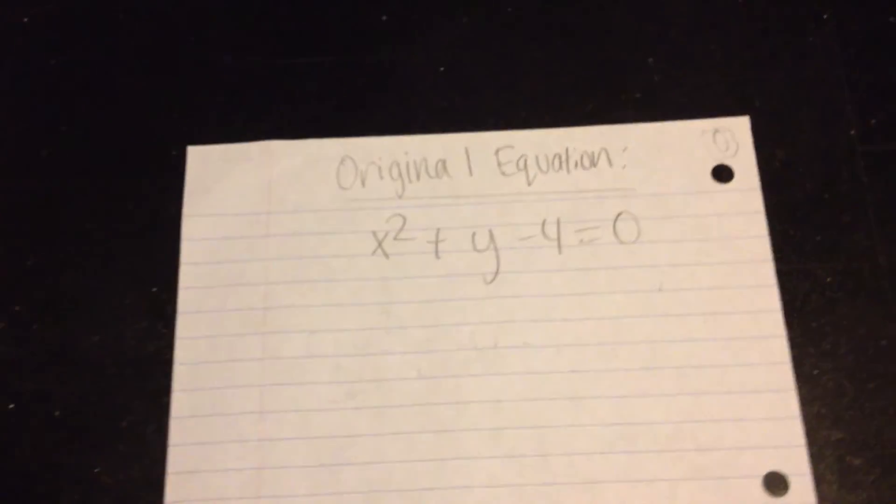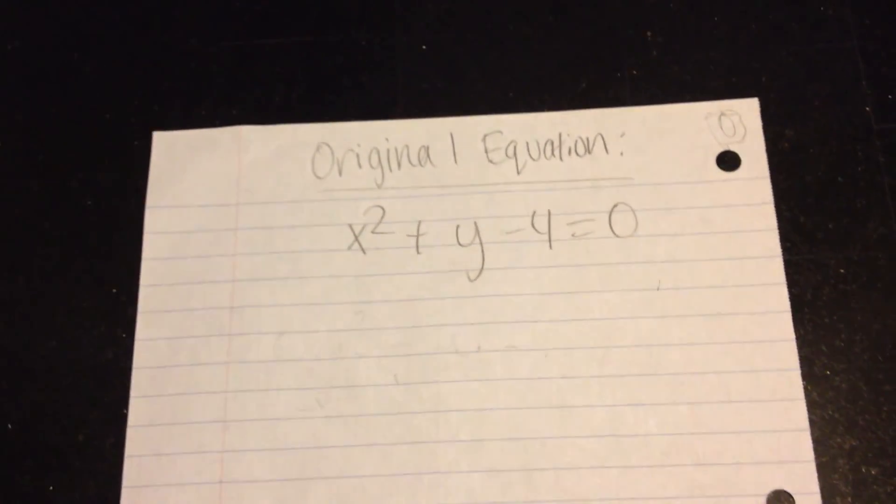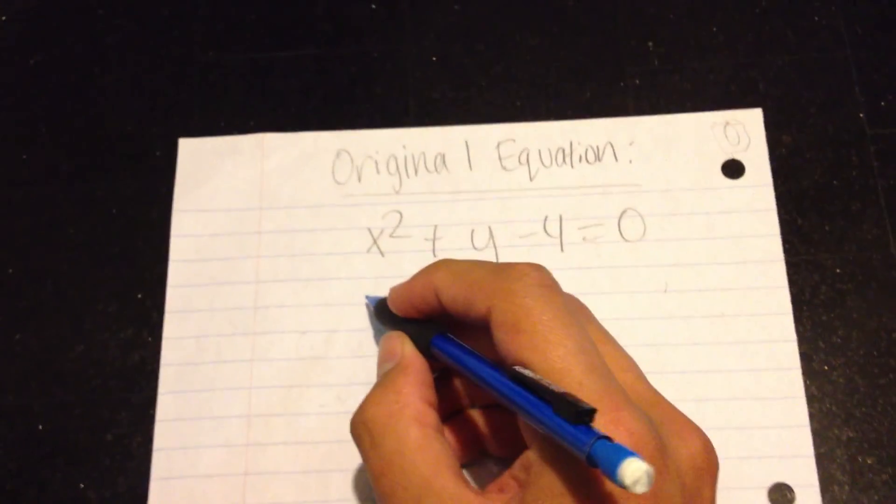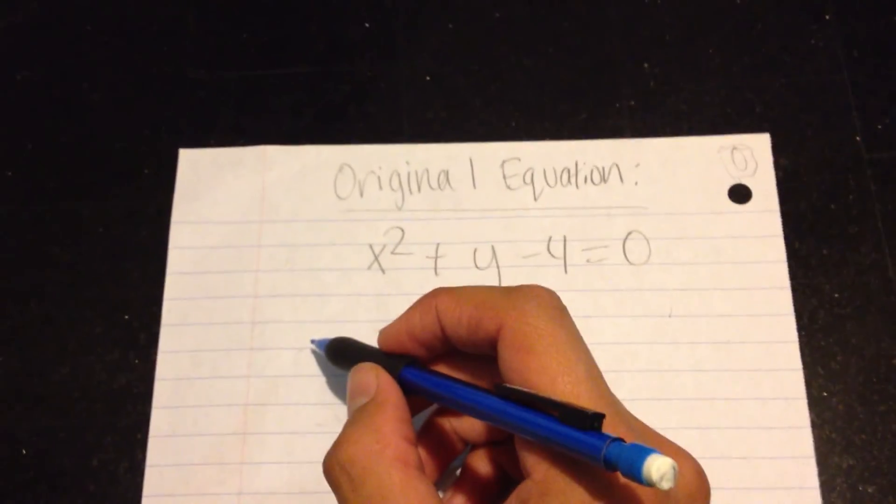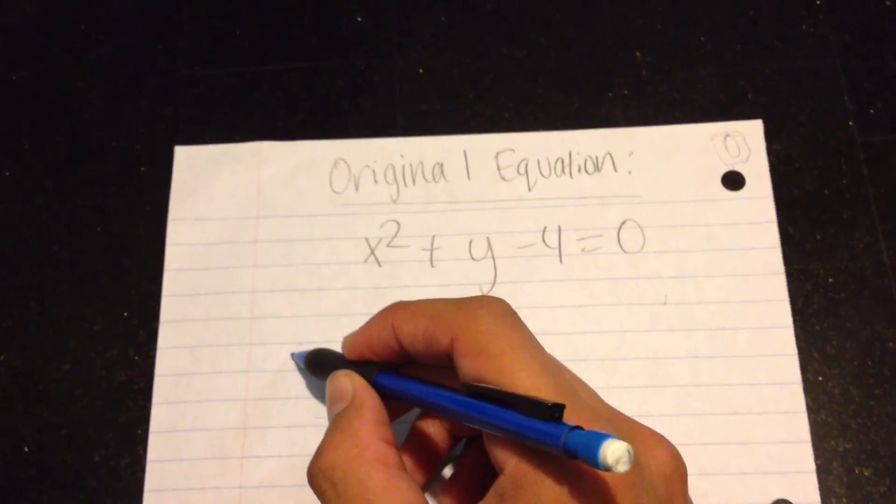And by the very definition of not having x-axis symmetry and having y, that means that origin symmetry is not possible. But I will show you how to test for that anyways. Because you need to know anyways.